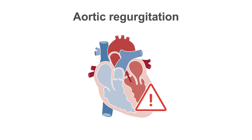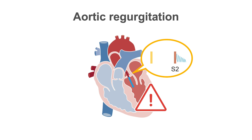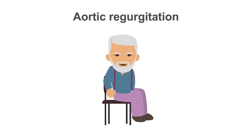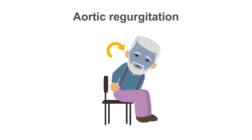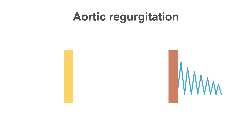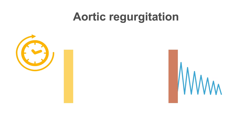If aortic valve dysfunction is present before or after infective endocarditis develops, the incompetent aortic valve will allow blood to pass retrograde into the left ventricle during diastole. The murmur of aortic regurgitation is a high-frequency murmur which begins immediately after S2. It is best heard while the patient is sitting upright, leaning forward, and holding their breath in deep expiration. It has an early peak followed by a decrescendo pattern, and the longer the duration of the murmur, the more severe the aortic regurgitation.